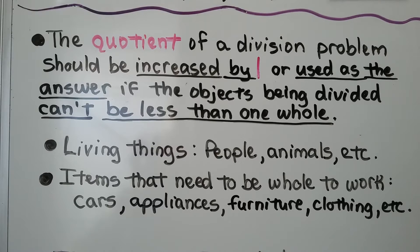The quotient of a division problem should be increased by one, or used as the answer, if the objects being divided can't be less than one whole. So that would be living things like people, or animals. We can't have a half a person, or a third of a dog.